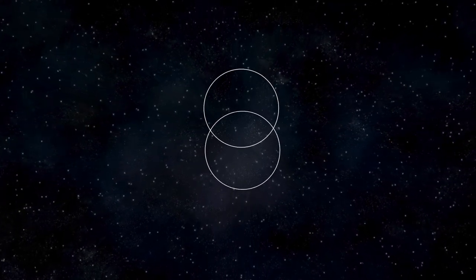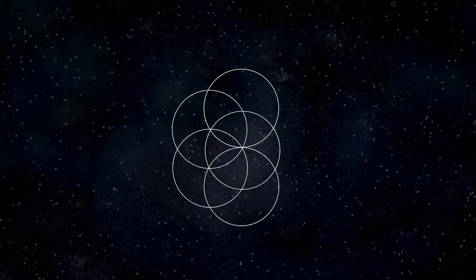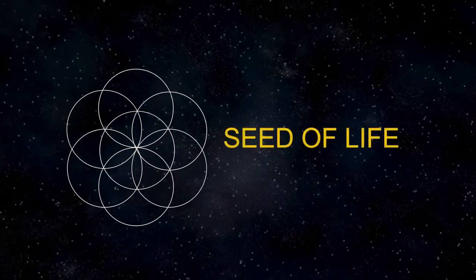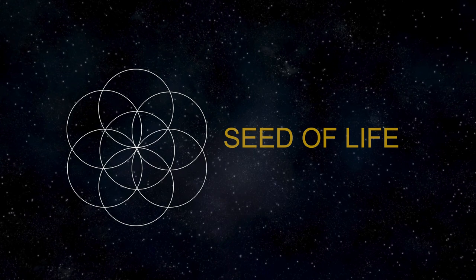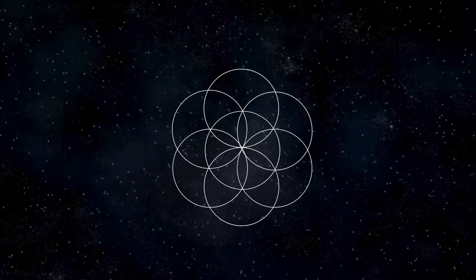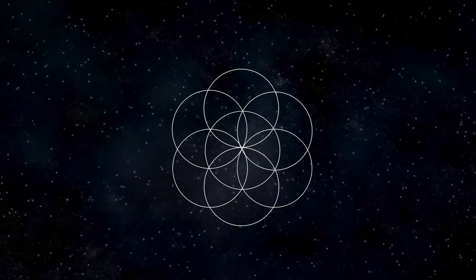Following the Vesica Pisces is the formation of the Seed of Life, a pattern of six circles surrounding a central one. This stage symbolizes the six days of creation, a concept found in Judeo-Christian and Islamic teachings. The Seed of Life is seen as a blueprint of the universe, containing the essential information of life itself.